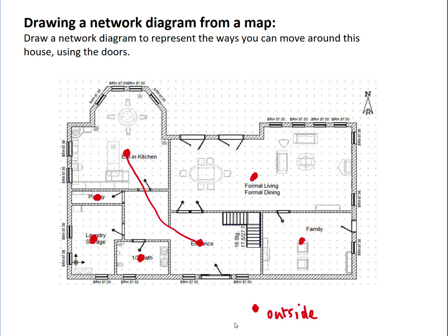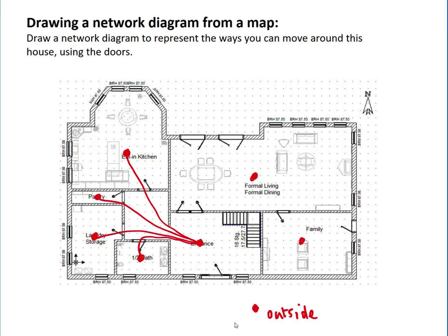So for example the kitchen connects to the entrance, and that's perhaps the route you might walk in between them. We've drawn it on as an edge. We can draw on the other ones there from the pantry, the laundry and the bathroom.